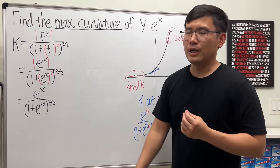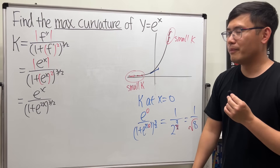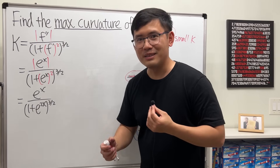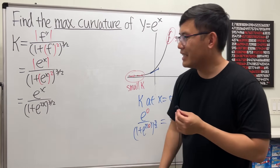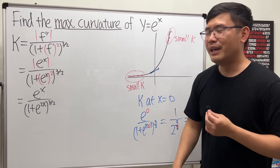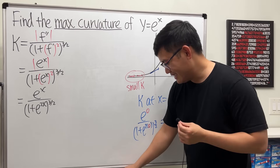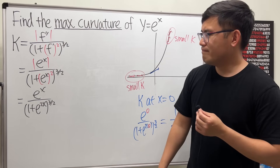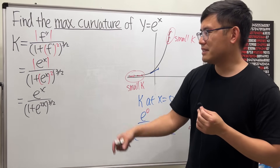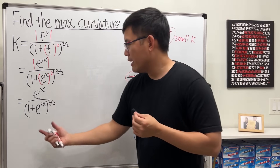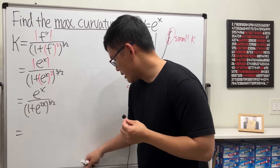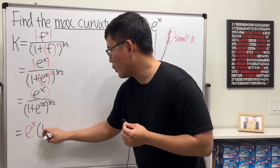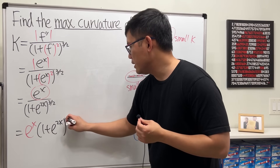How do we find the maximum curvature? We have an expression for the curvature, so we take the derivative of this and set it equal to 0, find the critical number, and make sure we get a maximum. Instead of using the quotient rule, I'm going to bring the denominator up to the numerator. So we have e to the x times 1 plus e to the 2x raised to the negative 3/2 power.